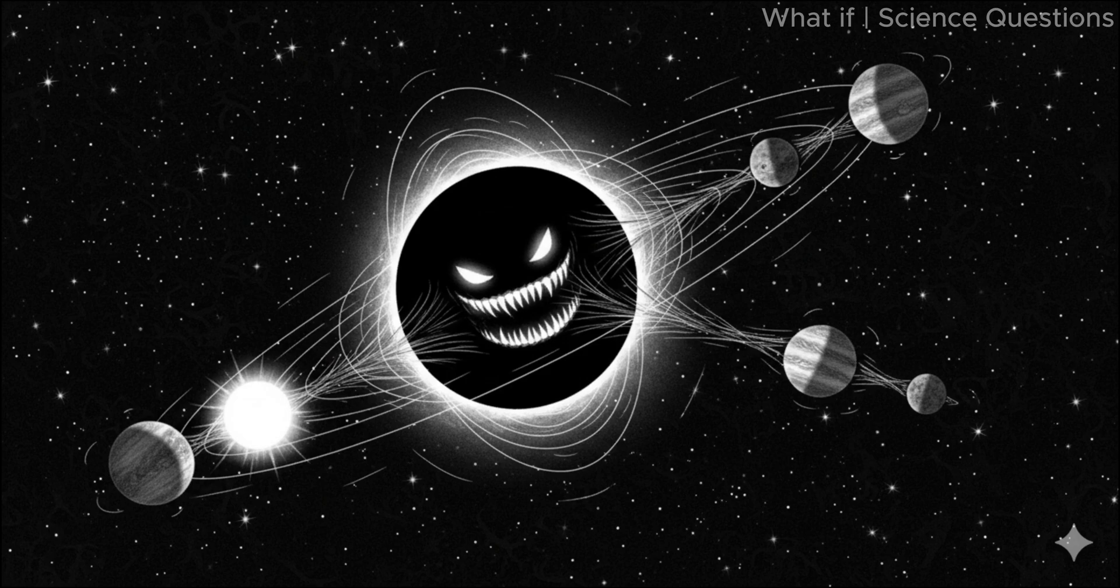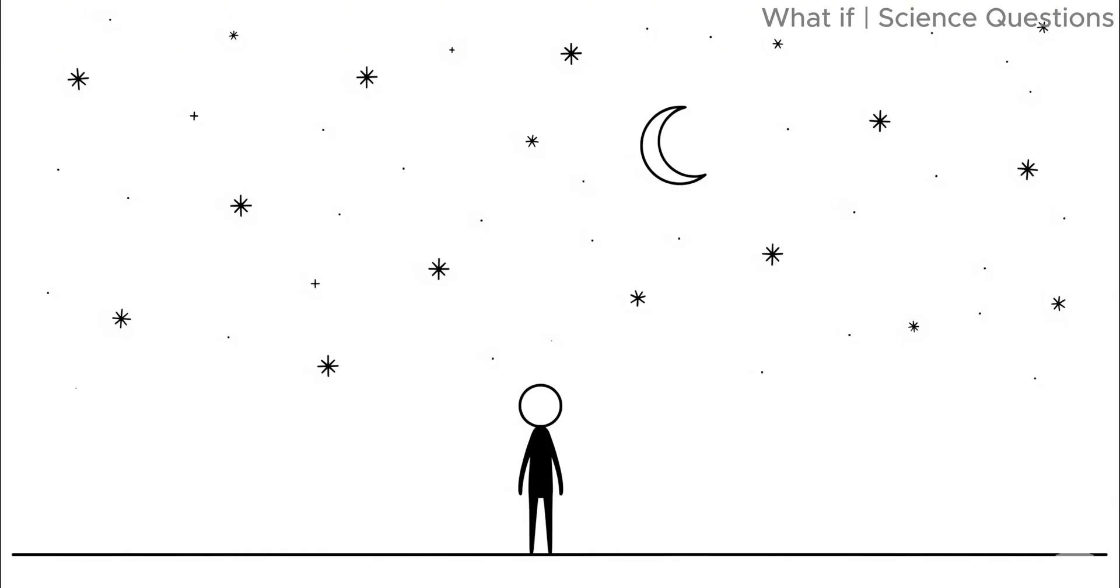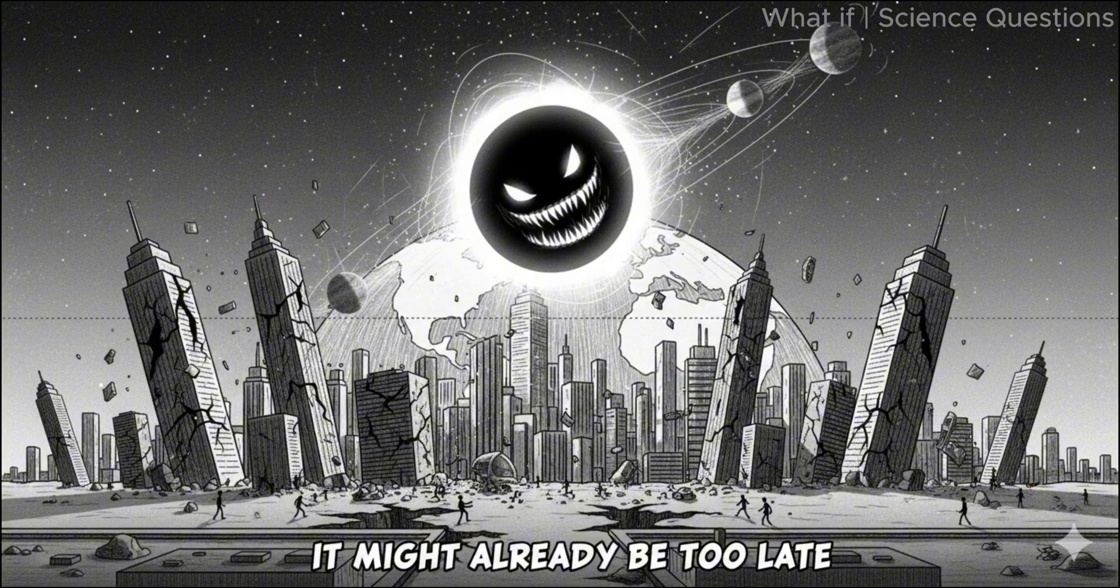A black hole, an object so dense that not even light can escape, is on a collision course with our cosmic neighborhood. You wouldn't see it coming. There would be no warning lights, no ominous glow in the sky, just darkness. And when it finally reveals itself, it might already be too late.